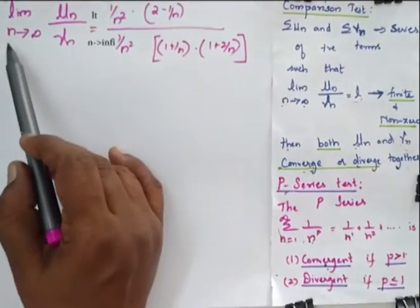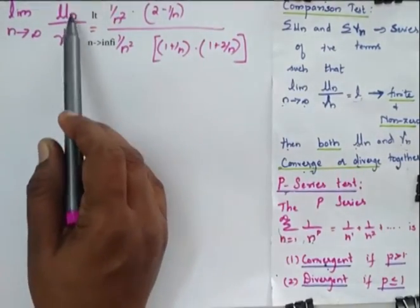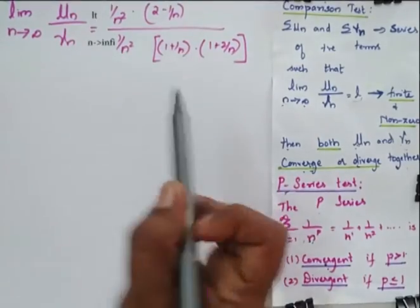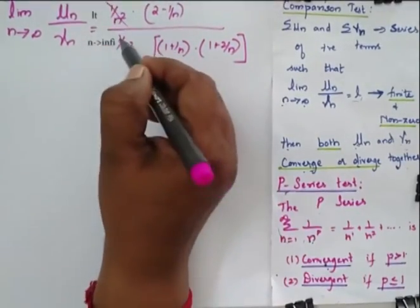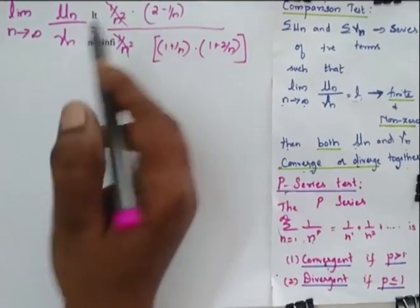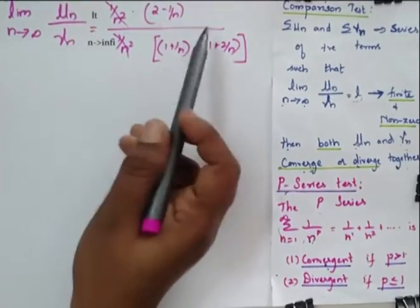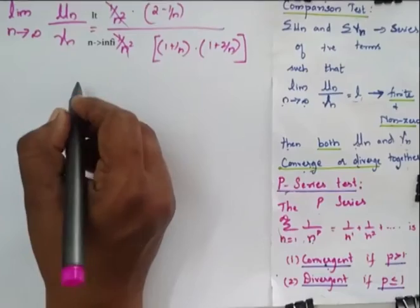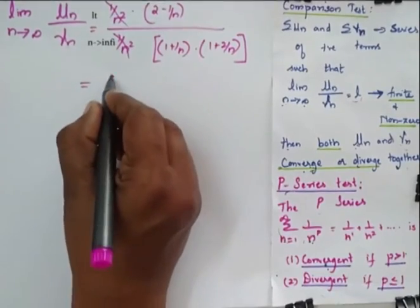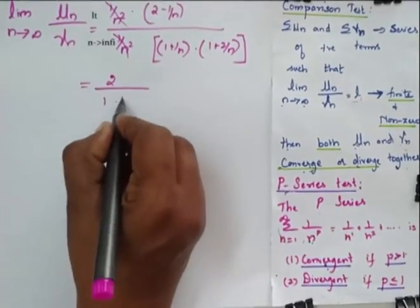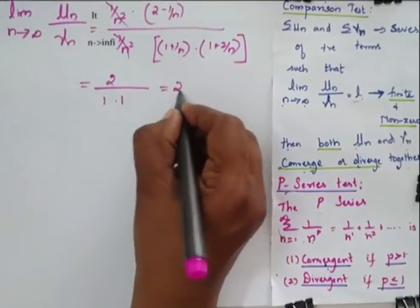Now limit of n tending to infinity of un by vn is equal to this. So I can cancel this 1 by n square, 1 by n square. Now when I substitute the limit n tending to infinity in this, I will be getting it as 2 by 1 into 1, which is equal to 2.